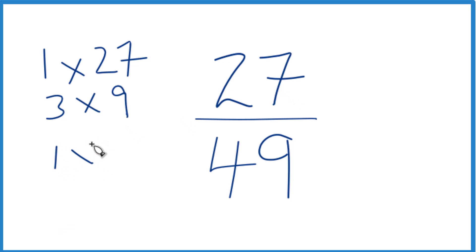49: 1 times 49, and then it looks like 7 times 7. Those are the factors for 49.